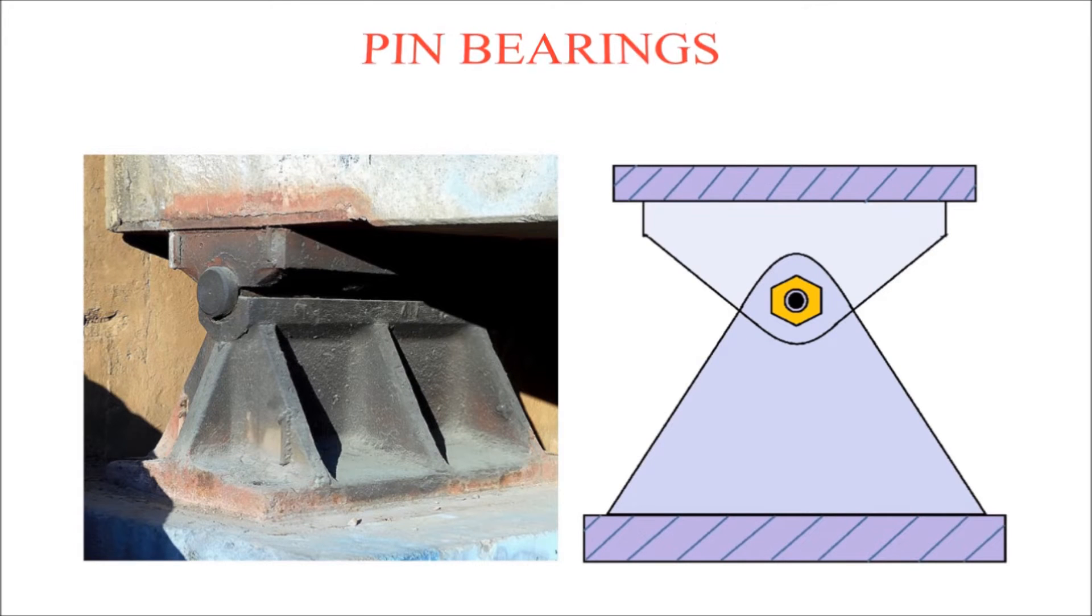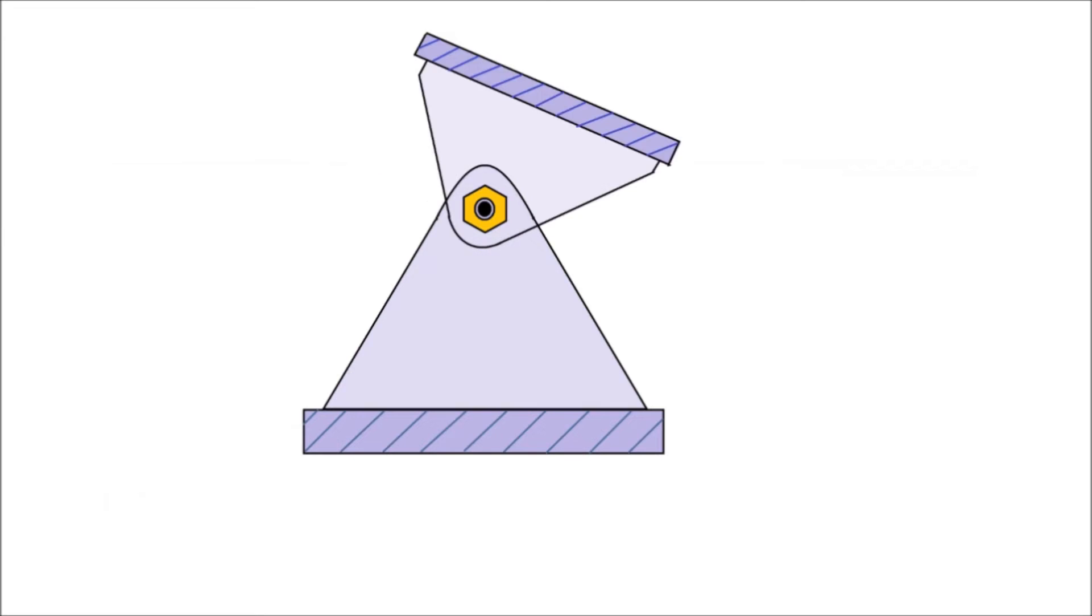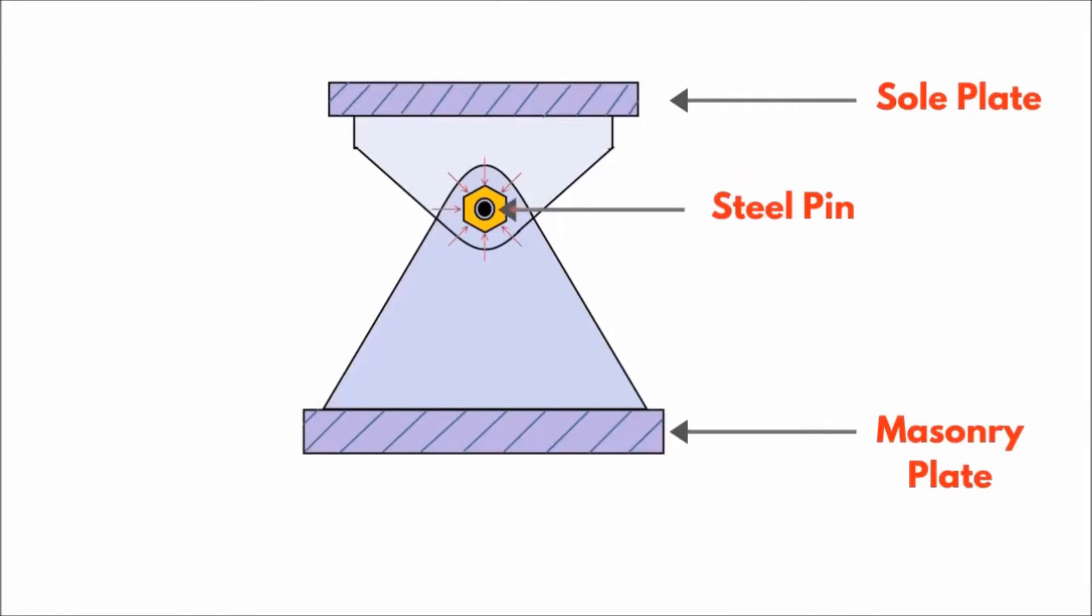Pin bearings are one of the oldest types of bearings. They permit rotational movement and prevent translational movement. The pin transfers forces by rotation from the sole plate, which is attached to the superstructure, to the masonry plate, which is attached to the substructure. These plates are usually anchored by bolting to the substructure, which resists translational movement.